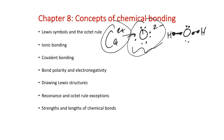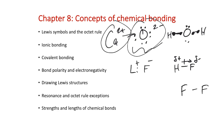Then we'll talk about covalent bonding and get into bond polarity and electronegativity — how different atoms have a different desire for electrons when making bonds. We can appreciate molecules like lithium fluoride as a plus-minus ionic compound, HF as partially ionized with a polar bond, and F2 where two fluorine atoms equally pull on the electron pairs in the bond, so no charge develops.